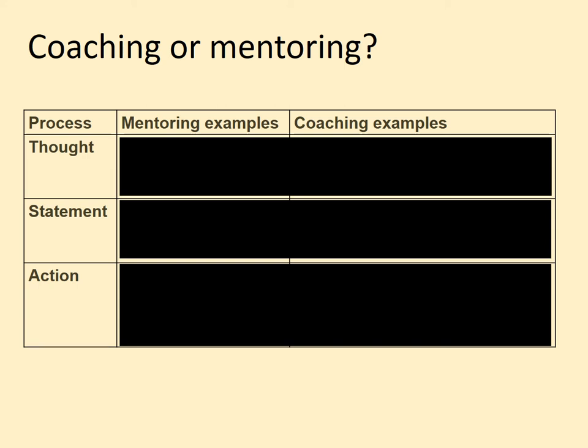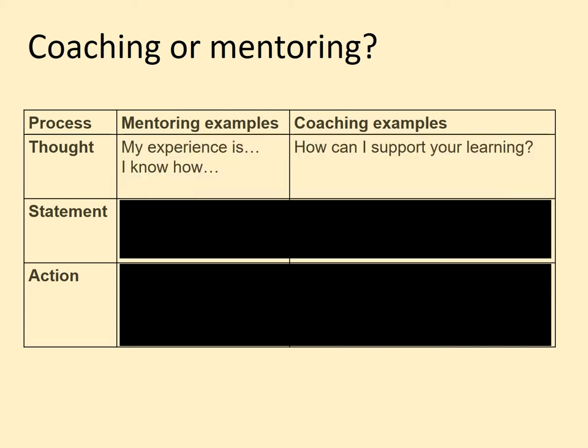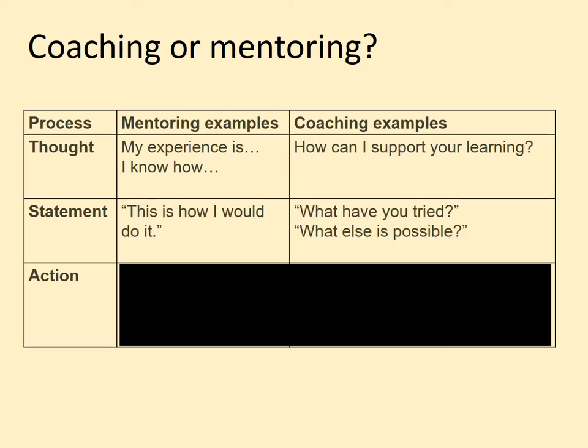How might this look different in a real conversation? When mentoring, in the thought category you might say 'my experience is...' or 'I know how to do this.' But in coaching, you might say 'how can I help you?' or 'what do you need from me?' — asking them to give you direction rather than volunteering. For statements, mentoring might be 'this is how I would do it,' while coaching might be 'what have you already tried?' or 'what do you think is possible?'